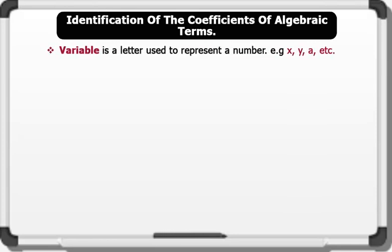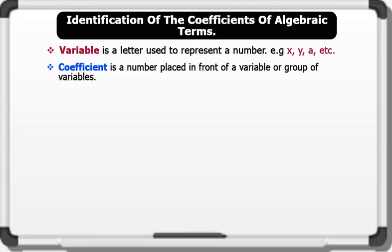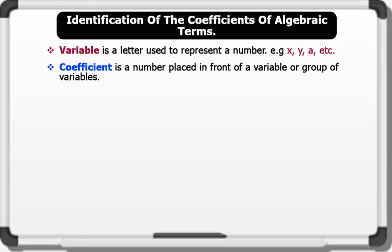Identification of the coefficients of algebraic terms. Remember that a variable is a letter used to represent a number, while a coefficient is a number placed in front of a variable or group of variables. For instance, 6Y. Six is the coefficient of the variable Y.